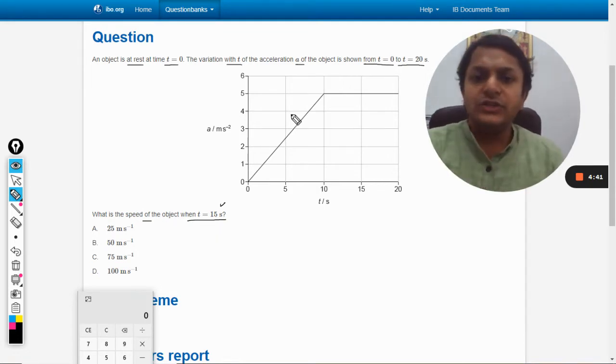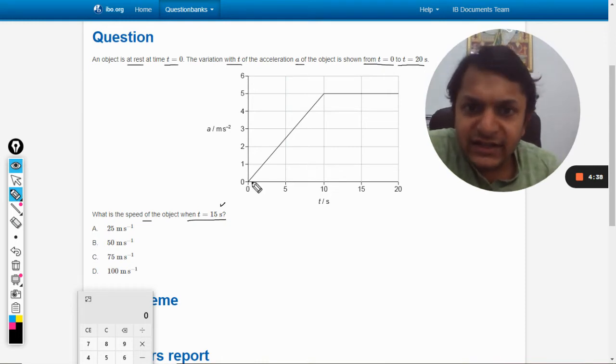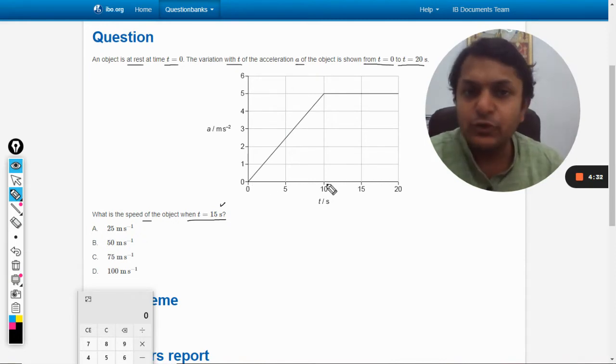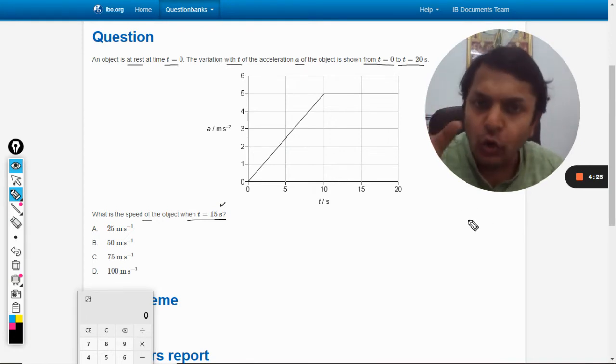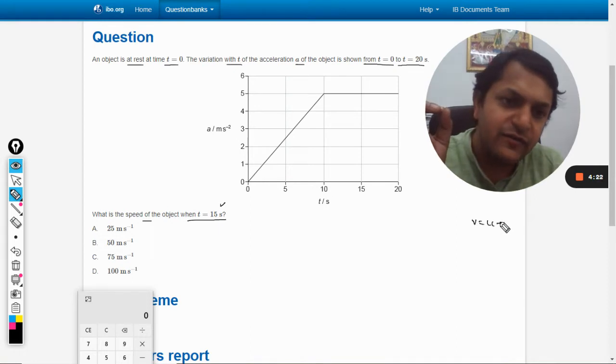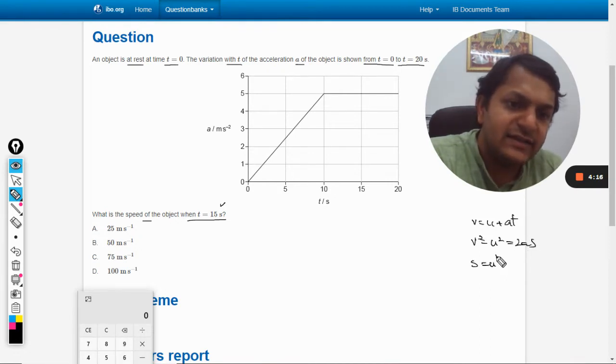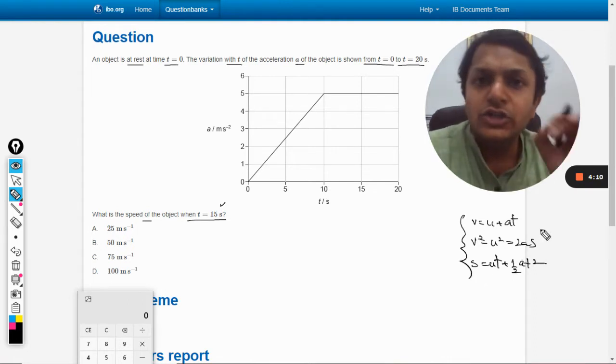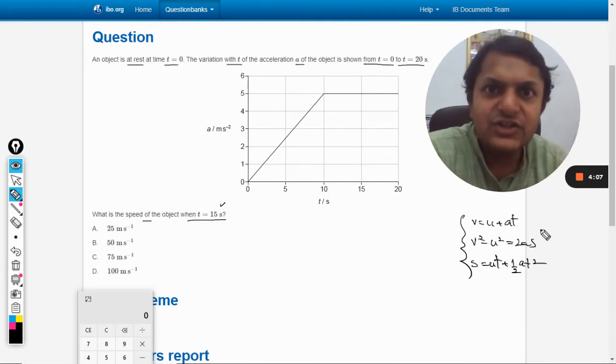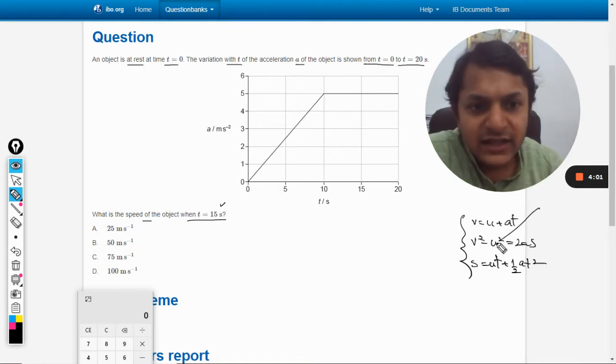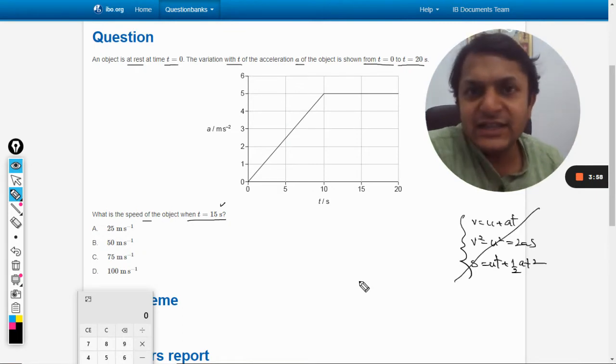Okay, so as it is evident from the graph, the acceleration is not constant, it is not uniform and acceleration itself is varying up to 10 seconds in first 10 seconds. Now that's a very big problem because all the formulas that we know, every equation of motion like v is equal to u plus at, v square minus u square is equal to 2as and s is equal to ut plus half at squared. All these equations are valid only on uniformly accelerated motion. So acceleration has to be constant. Now, up to 10 seconds, acceleration is not constant. It means these equations will not be able to help us. They are not valid here.